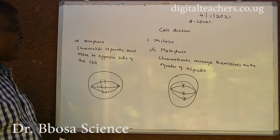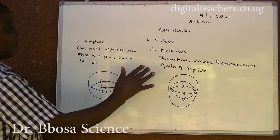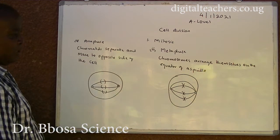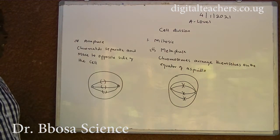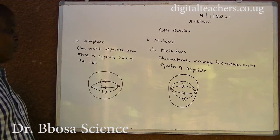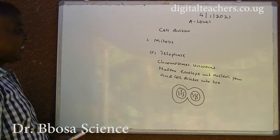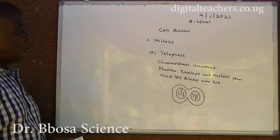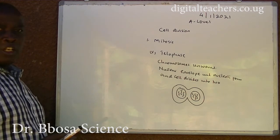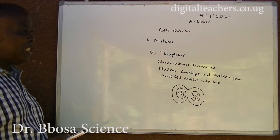The third stage of mitosis is metaphase. In metaphase, chromosomes arrange themselves on the equator of the spindle. The fourth stage is anaphase, where chromatids separate and move to opposite sides of the cell. The fifth stage is telophase, where chromosomes unwind, the nuclear envelope and nucleolus reform, and the cell divides into two.